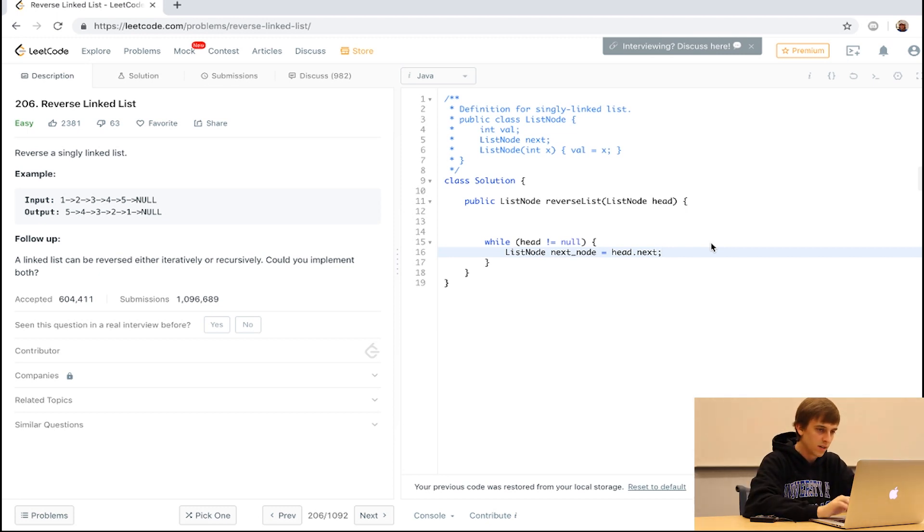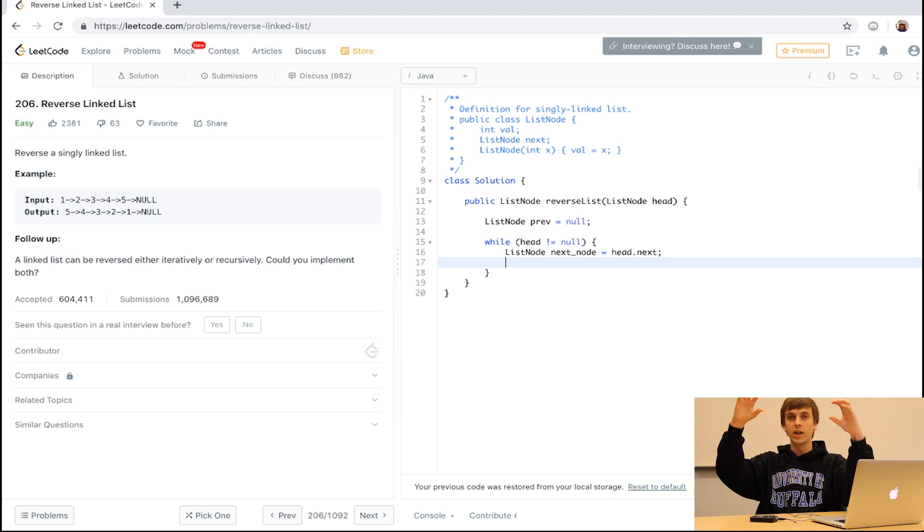So list node previous. Because the previous to the head is null. There's nothing before the head. So we'll say list node prev equals null. Now when we loop through, we're going to want to say head.next equals prev. So we kind of just reverse the pointers and then we're going to say prev equals head and head equals next node.